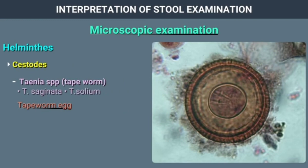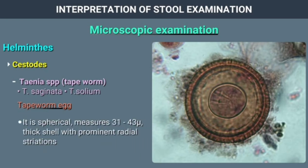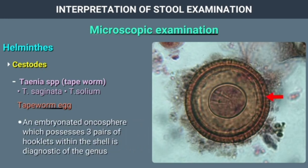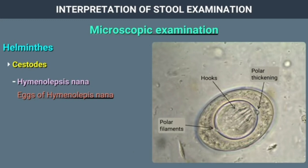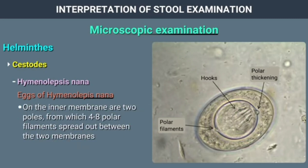Taenia species (Taenia saginata or Taenia solium): The tapeworm egg is spherical, measures 31 to 43 microns, with a thick shell with prominent radial striations. An embryonated oncosphere possessing 3 pairs of hooklets within the shell is diagnostic of the genus. H. Nana eggs are oval, measuring 30 to 50 microns. On the inner membrane are 2 poles from which 4 to 8 polar filaments spread out between the 2 membranes. The oncosphere has 6 hooks.